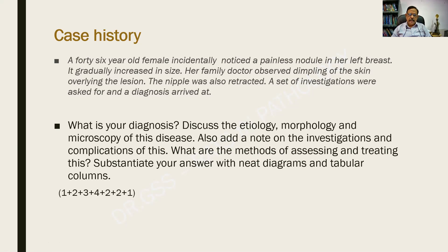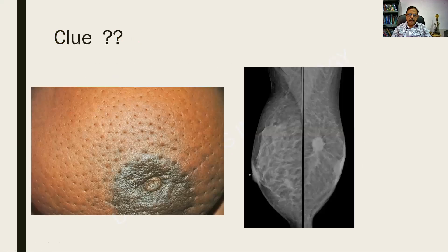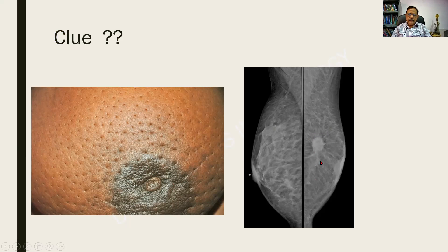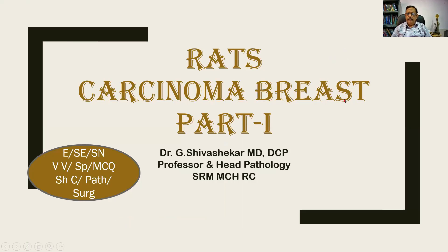I am sure you will be knowing the diagnosis by now. Here is a clue — look at this image. I am finding multiple areas of dimpling in the skin overlying the breast, and there is a retraction of the nipple. This is called peau d'orange, or an orange skin-like appearance. There is also an altered X-ray called the mammogram showing an opacity. Yes, your diagnosis is carcinoma of the breast.